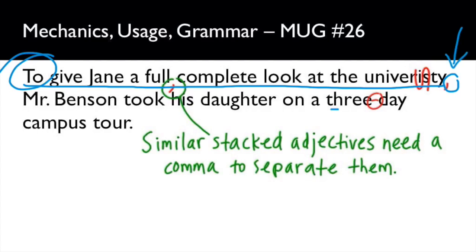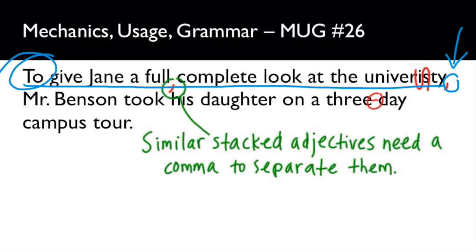"Three-day" is hyphenated because "three-day" describes the tour — it's two words working as one adjective, so it gets hyphenated. Interestingly, I've stacked two adjectives for "tour" that are not separated with a comma: "three-day" and "campus." Three-day is very different in meaning than campus, so notice there is no comma there. That's correct — you would not put a comma there.